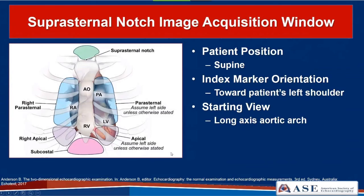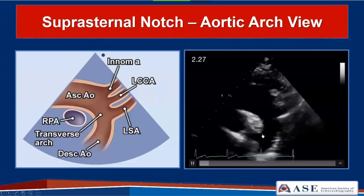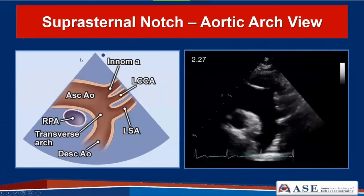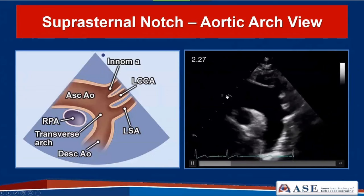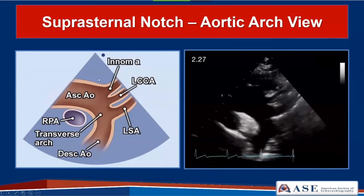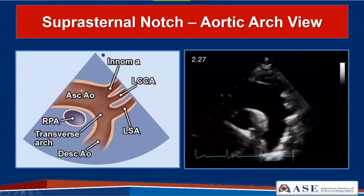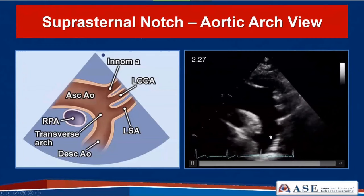Next is the suprasternal notch image acquisition window. The patient is in a supine position with the index marker towards the patient's left shoulder. You may need to do small rotations between about 12 o'clock and 1 o'clock position. The starting view is the long axis of the aortic arch. If you start with the probe too perpendicular, you'll have difficulty stretching out the arch, so tip the face of the transducer inferiorly to align almost parallel to the neck for better visualization of the ascending aorta, transverse arch, and descending aorta.